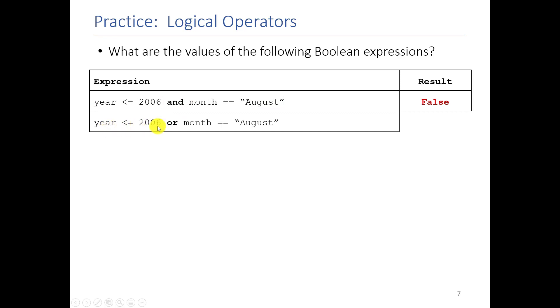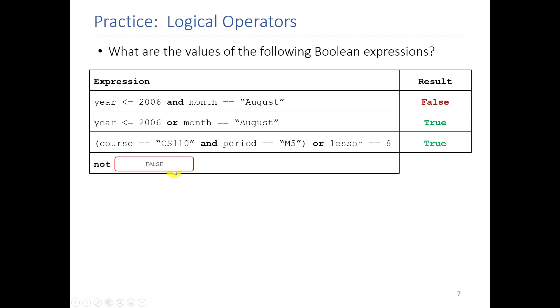So now let's talk about if the year is less than 2006 or the month is equal to August. So now we have false or true and with an OR statement all you need is one side to be true so this whole thing is true. If your course is equal to CS110 true and the period is equal to M5 which it probably isn't, this whole thing inside the parentheses is false, but or the lesson equals 8 which in this case it is, then it is true. Here for example is how we use NOT, today's lesson is lesson 8 so lesson 8 is greater than 10 that's false, not false is true.